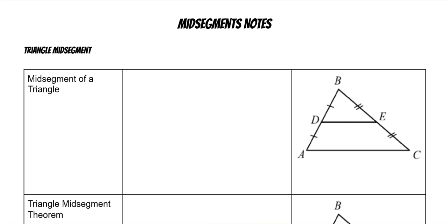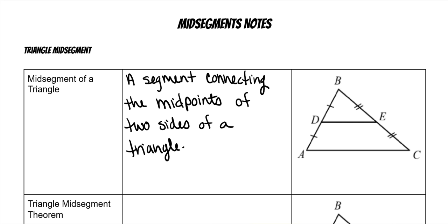We're going to go over mid-segments of triangles. A mid-segment of a triangle is a segment connecting the midpoint of two sides of the triangle. So in this picture, D is at the midpoint on the left side, E is at the midpoint on the right side, and our mid-segment is DE. It goes from midpoint to midpoint.